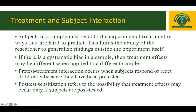The next threat to external validity is treatment and subject interaction. Subjects in a sample may react to the experimental treatment in ways that are hard to predict, which limits the researcher's ability to generalize findings outside the experiment. Selection-treatment interaction is similar to the differential selection problem associated with internal validity, and also occurs when subjects are not randomly selected for treatments. The fact that subjects are not randomly selected from a population severely limits the researcher's ability to generalize, since the representativeness of the sample is in question.